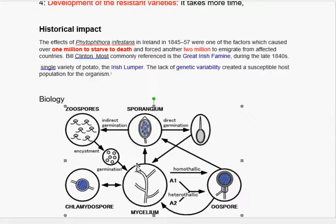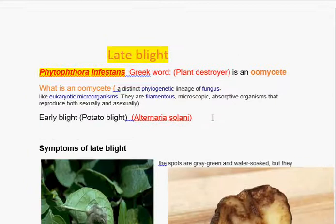So by sporangia, oospores, chlamydospores, and zoospores — these are all hard resistant structures. By these hard spores, this pathogen becomes very difficult to eliminate. Hopefully this video will give you information regarding leaf blight. If you have any questions, you can put your comments below the video or send me an email. Thank you very much for listening.